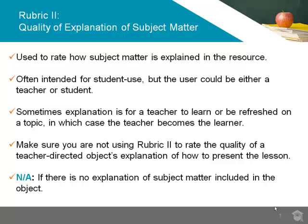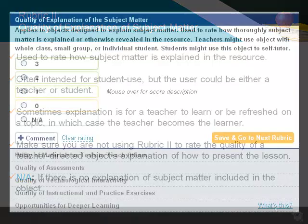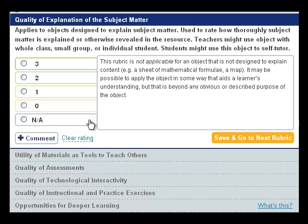In these cases, the teacher becomes the learner. These sections of an object are the only parts to consider when applying this rubric. Make sure you are not using Rubric 2 to rate the quality of a teacher-directed object's explanation of how to present the lesson. And don't use it at all if there is no explanation of subject matter included or intended in the object. In that case, use the NA rating and move to the next rubric.